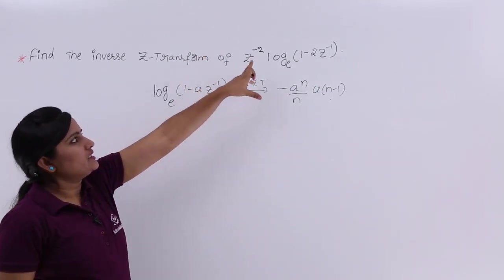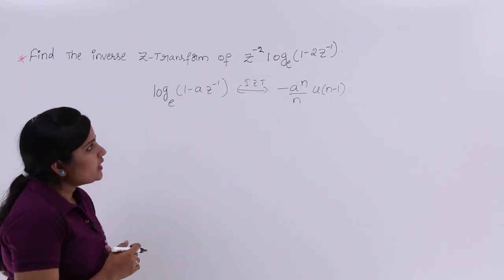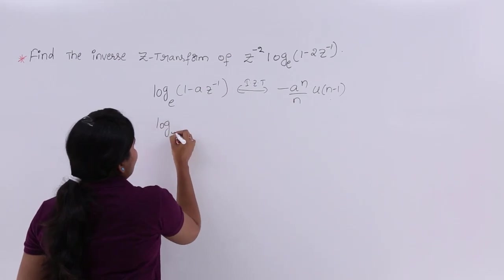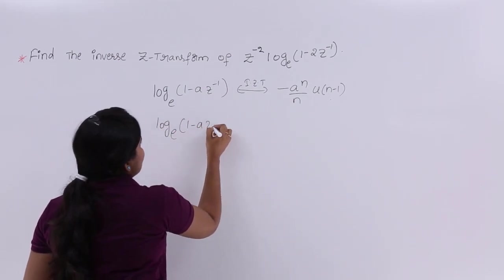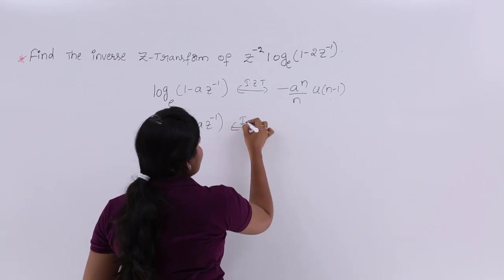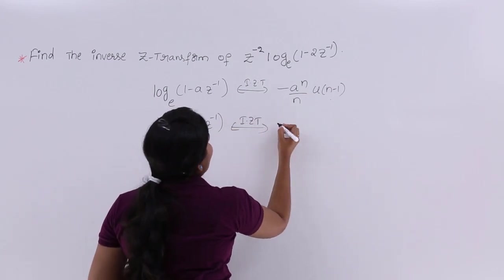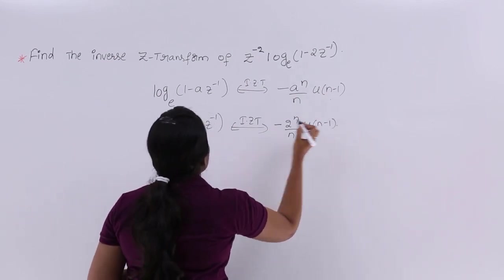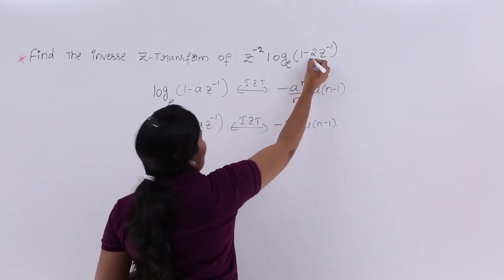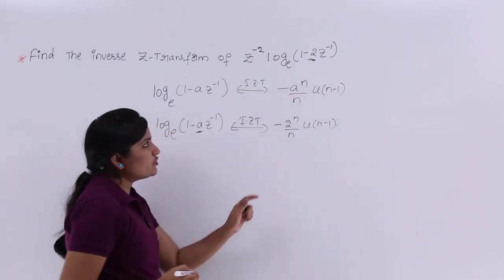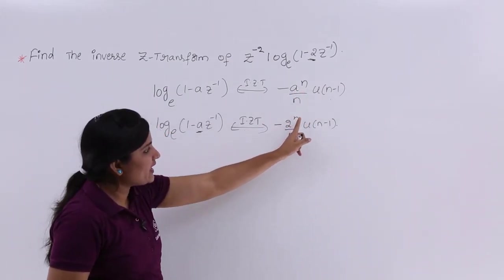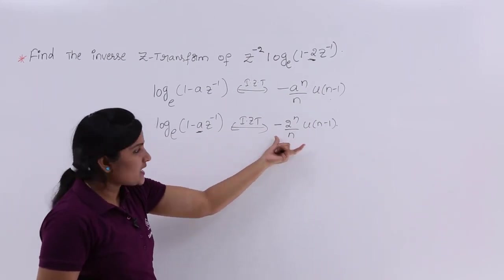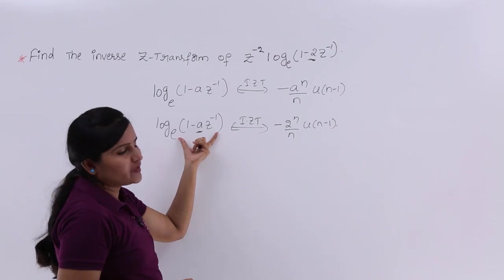I am going to apply this for this problem. Here I have log_e(1 - 2Z^(-1)), so the inverse Z-transform is -(2^n / n) * u(n-1), because in place of 'a' I am having 2. So that is why I replace 2 in place of a: -(2^n / n) * u(n-1). This is the inverse Z-transform up to log_e(1 - 2Z^(-1)).